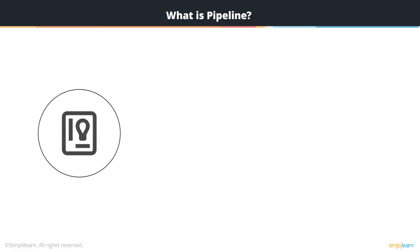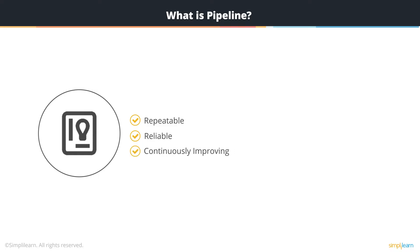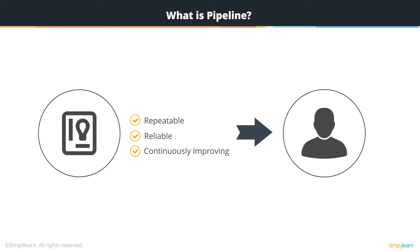The idea behind creating a pipeline is to be able to create a repeatable and reliable system and to continuously improve the process of software development and delivery, in order to make your software delivery from concept stage to your customer faster. The goal is to enable a constant flow of changes into production using an automated process by including various tools at each of the steps.